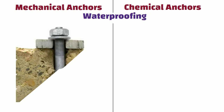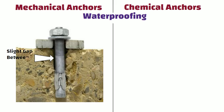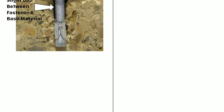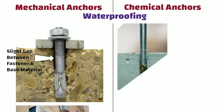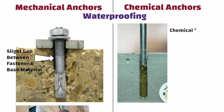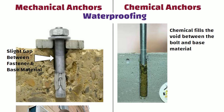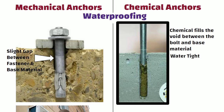Waterproofing: Mechanical fasteners have a slight gap between the fastener and the base material. If the fastener has been installed outside — such as when fixing an external AC unit, signage, or TV antenna to a building — the mechanical fastener may cause leakage into the building. Whereas with a chemical fastener, the chemical fills the void between the bolt and the base material, making the connection watertight. Use chemical fasteners for all external fastenings as well as in any other areas where leakage is a factor.